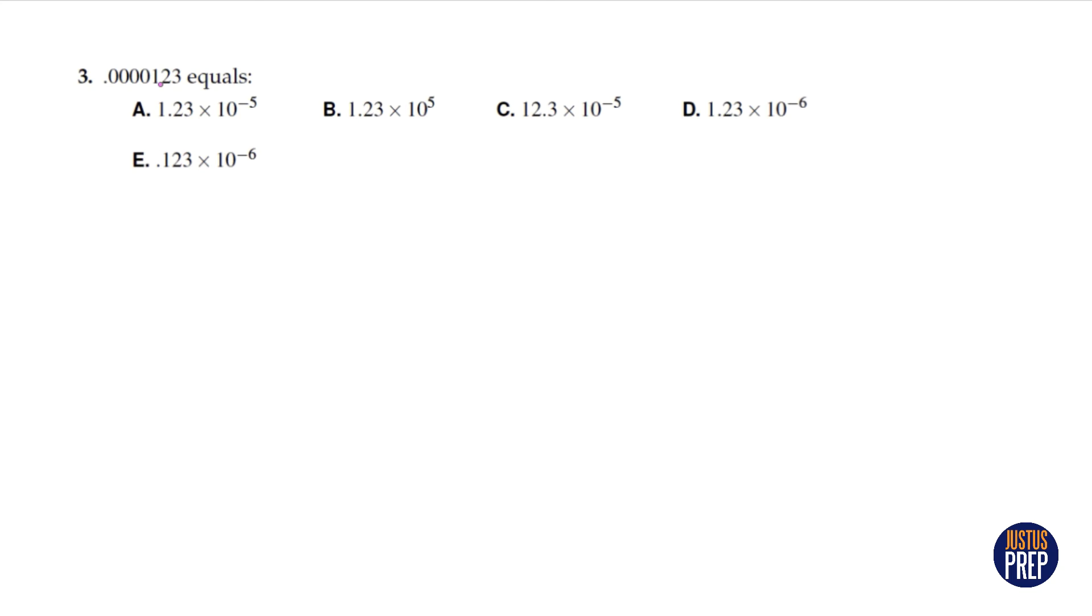So we have 1, 2, 3 here, these digits, and we have to make something that is between 1 and 10. So we would put the decimal here and make it a 1.23, not here or here.